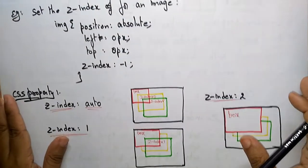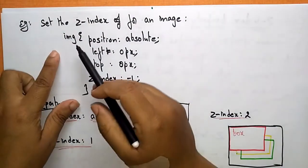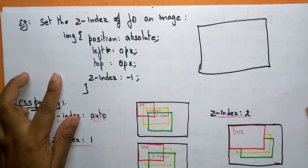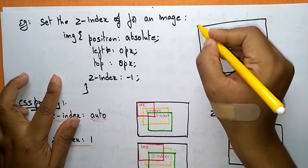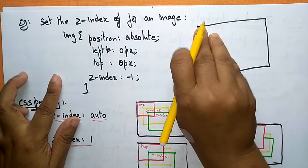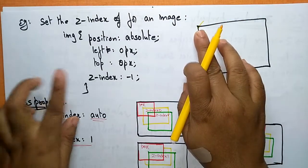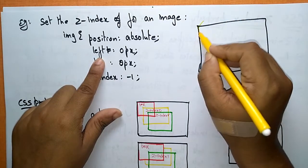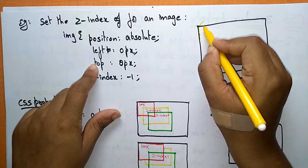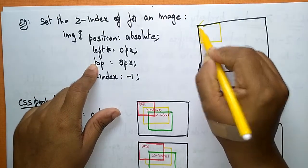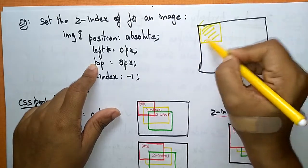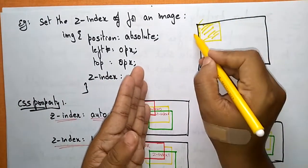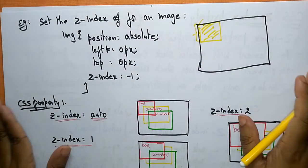If you want to set the Z-index for an image, here is a simple example. Whatever image you want to print at the corner — it takes position as absolute. Absolute means it is calculated from the parent container. Left is set to zero pixels, meaning start from here, and top is also zero pixels. Whatever image you want to print starts here. The Z-index is set to minus one, so the image starts from Z-index minus one.